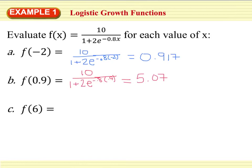And if you notice, as we go from a negative 2, we're down here in the low range. And then just by bumping up to 0.9, we've all of a sudden jumped up to 5.07.